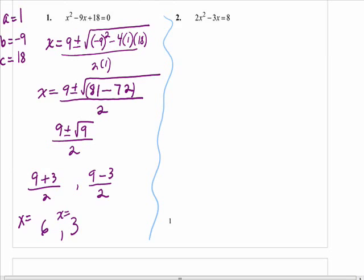Number 2, you need to get everything on one side equal to 0. Henry, what should I have once I have everything on one side equal to 0? 2x squared minus 3x minus 8 equals 0. Perfect. So now we have it in standard form. A equals, b equals, c equals. Greg, what's a, b, and c? 2, negative 3, negative 8. Nice.